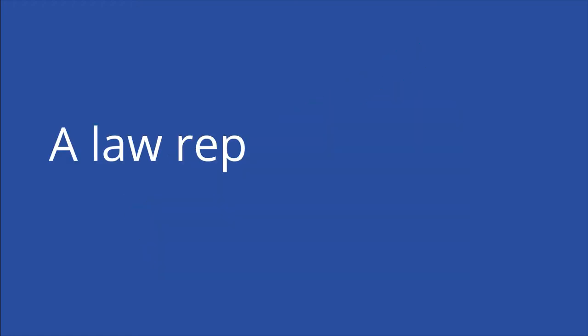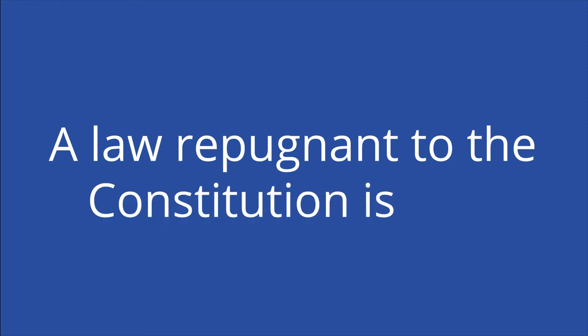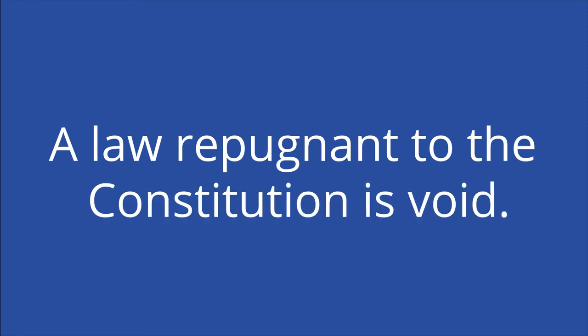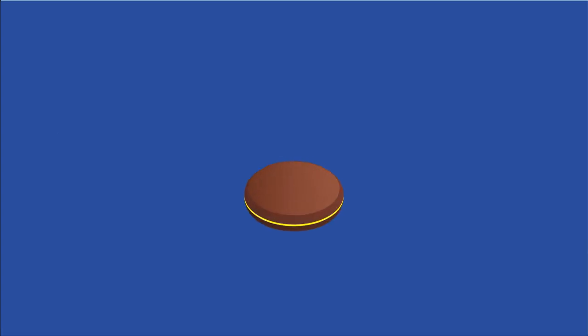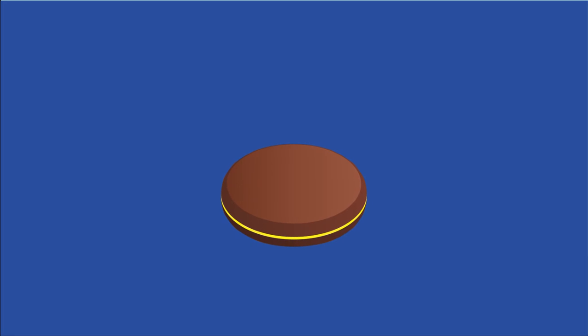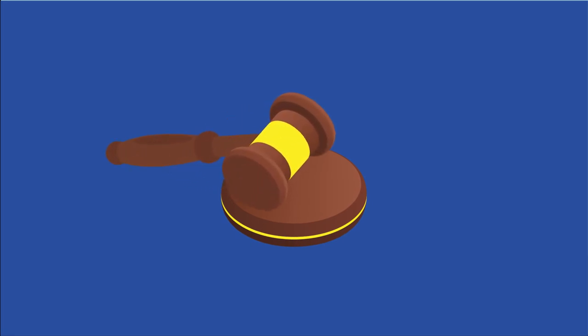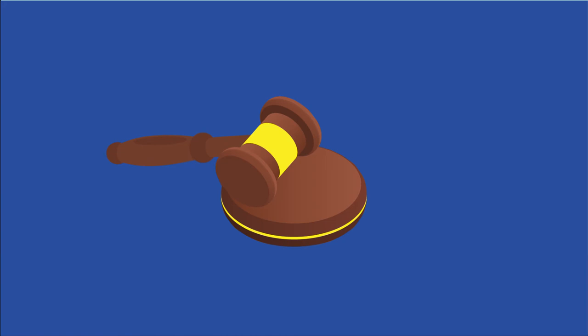Congress, who wrote and passed the Judiciary Act, did not have the power to modify the Constitution. Marshall famously wrote, 'a law repugnant to the Constitution is void.' By declaring an act of Congress unconstitutional, Marshall established judicial review. Federal courts can declare federal laws unconstitutional based on the Constitution, the supreme law of the land.